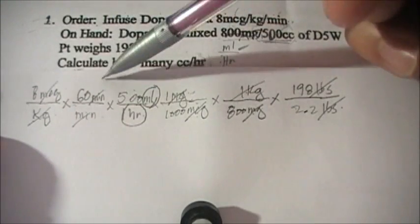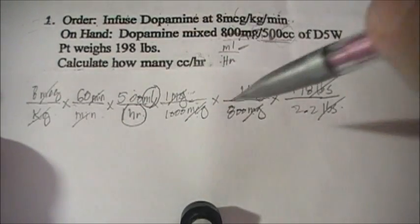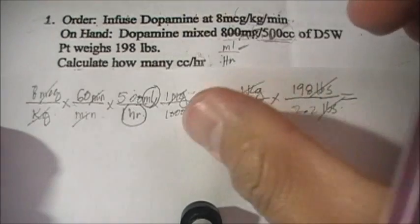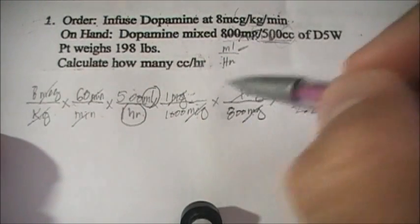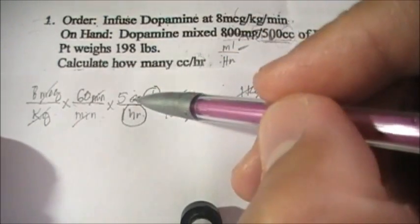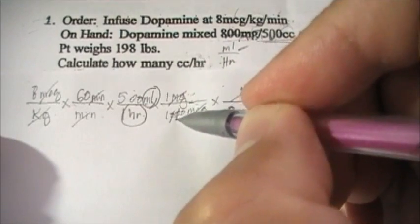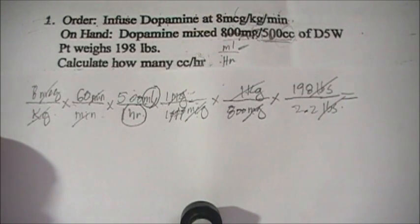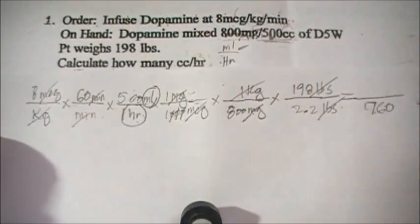What we have left are the numbers: 8, 60, 500, and 198 in the numerator against 1, 800, and 2.2 in the denominator. To simplify before multiplying, cancel all the zeros. Count the zeros in the numerator — 1, 2, 3 — and cancel them against zeros in the denominator: 1, 2, 3. That reduces 800 to 8 and removes trailing zeros, leaving a denominator value equivalent to 176.